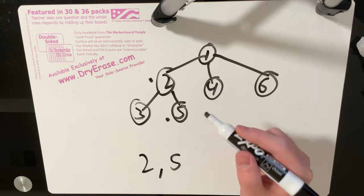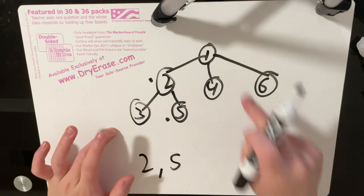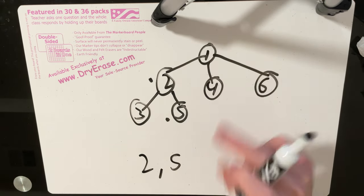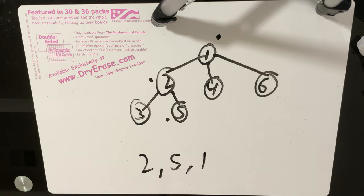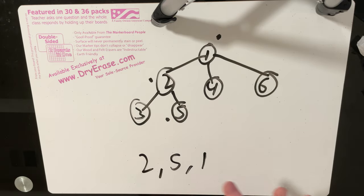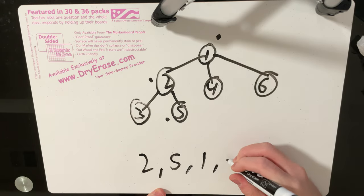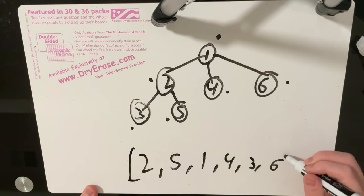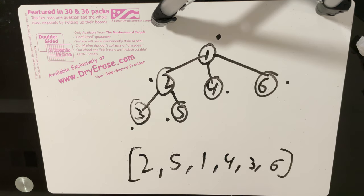Node five is marked. Now we consider all nodes adjacent to any marked node — in this case, three and one — so each has a 50% chance of being chosen. Let's go with node one next. Node one is marked, and now all nodes adjacent to any marked vertex happen to be all remaining unmarked nodes: three, four, and six. We can choose these remaining three nodes in any random order with equal probability, for example: four, three, six.